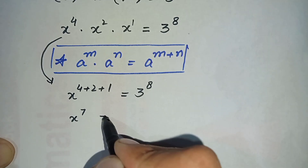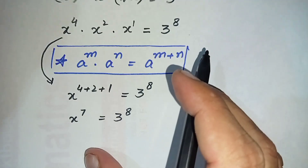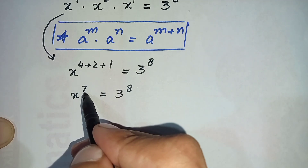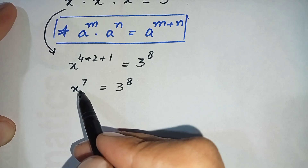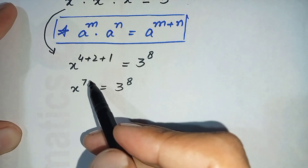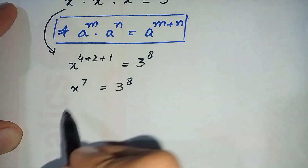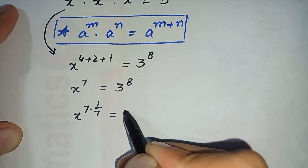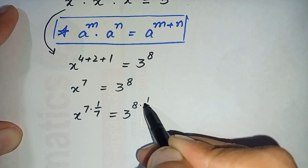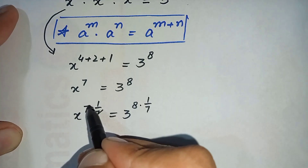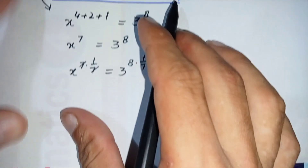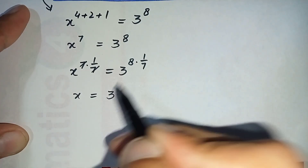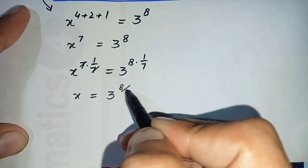So x raised to power 7 is equal to 3 raised to power 8. To find the value of x, we need to eliminate the 7 from the left-hand side. We multiply by 1 over 7 in the power on both sides. It becomes x raised to power 7 times 1 over 7 equals 3 raised to power 8 times 1 over 7. On the left-hand side, the 7 and 1 over 7 cancel, leaving just x. On the right-hand side, the powers multiply: 8 times 1 over 7 gives 8 divided by 7.